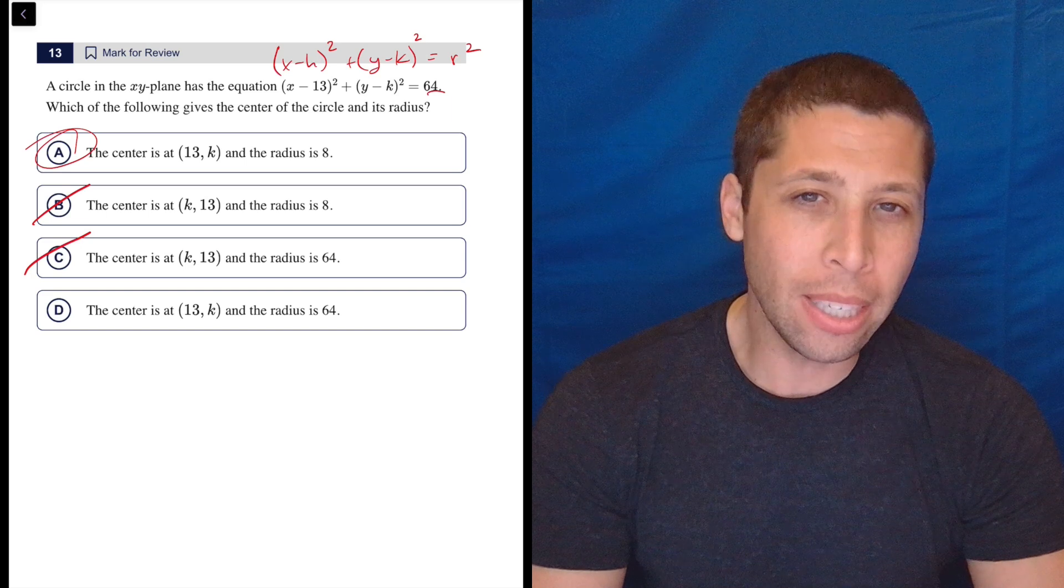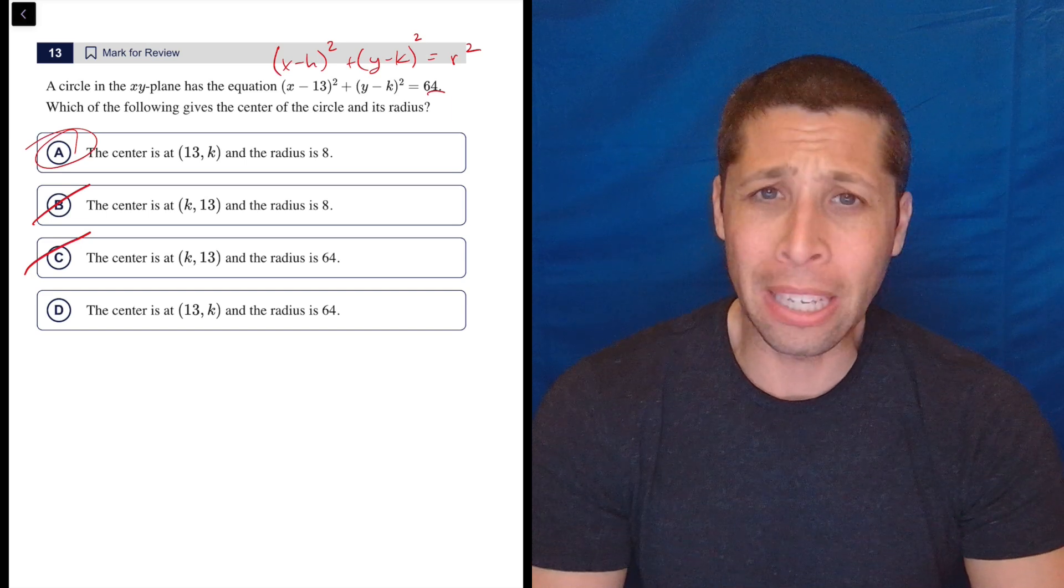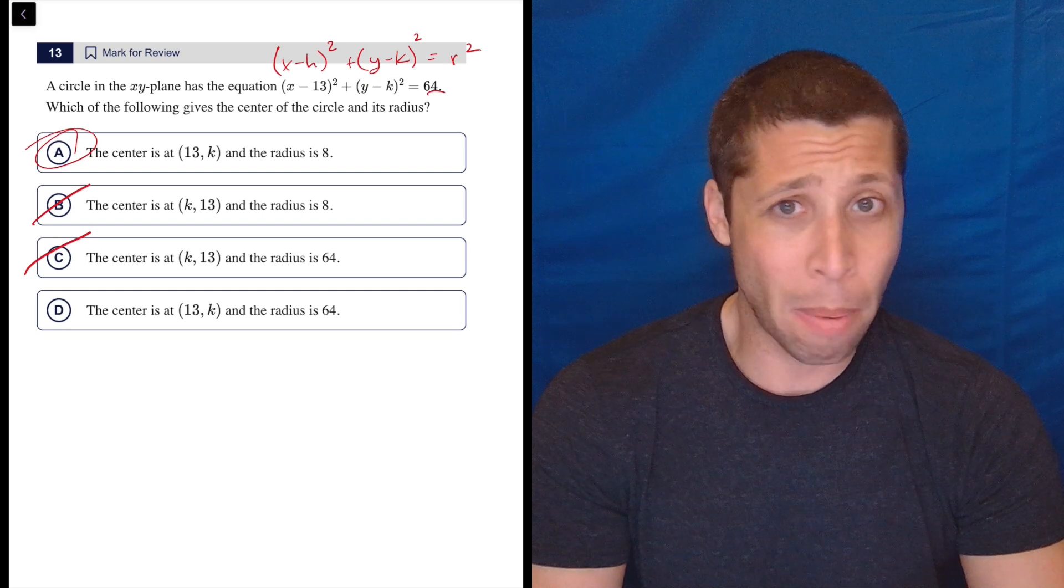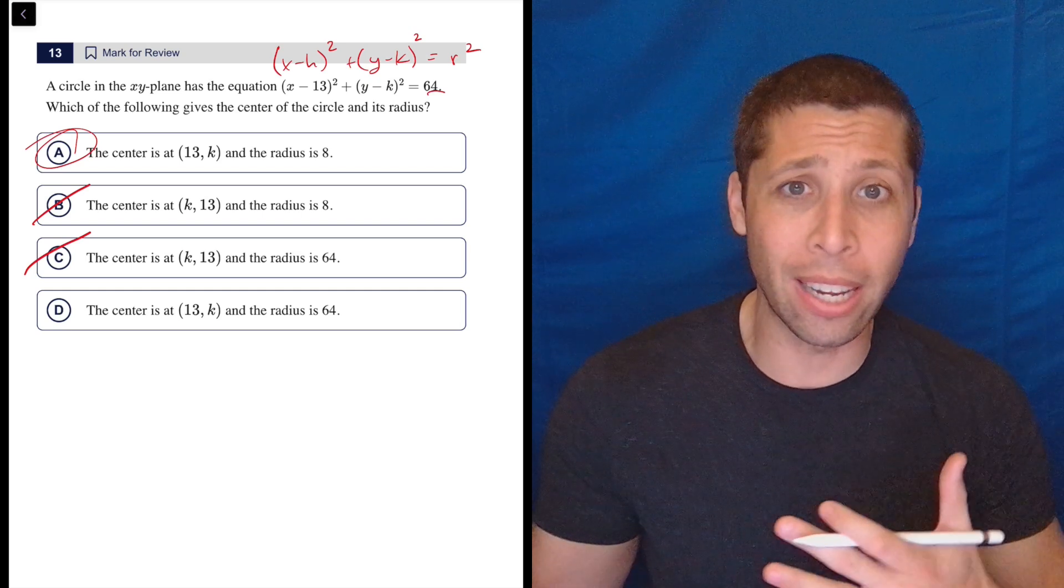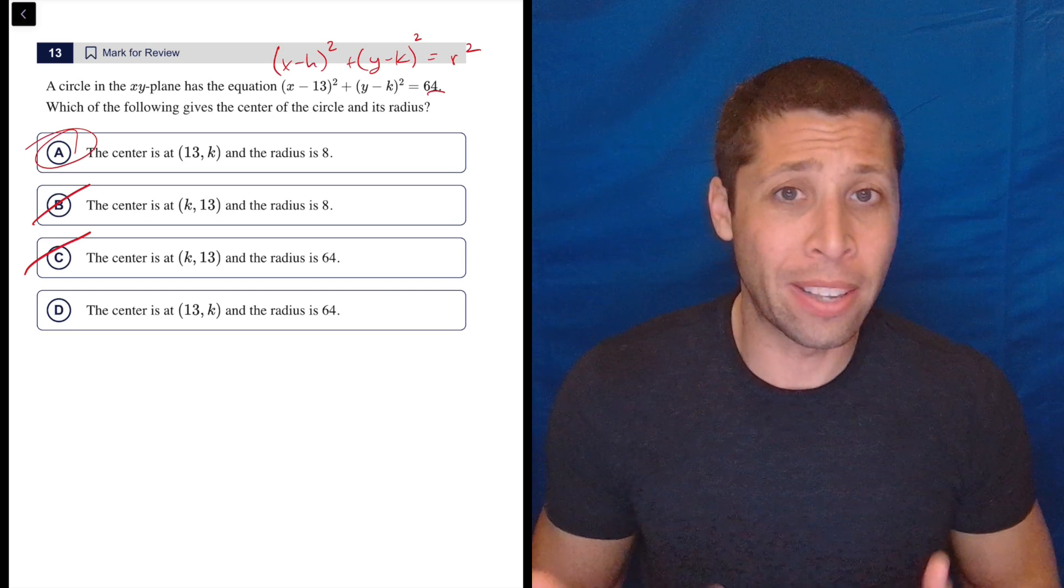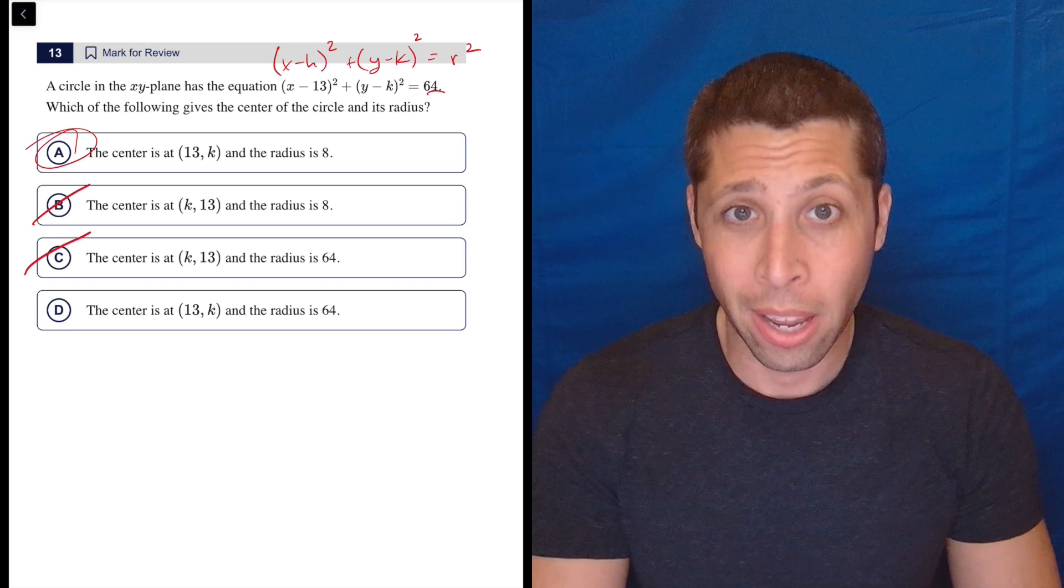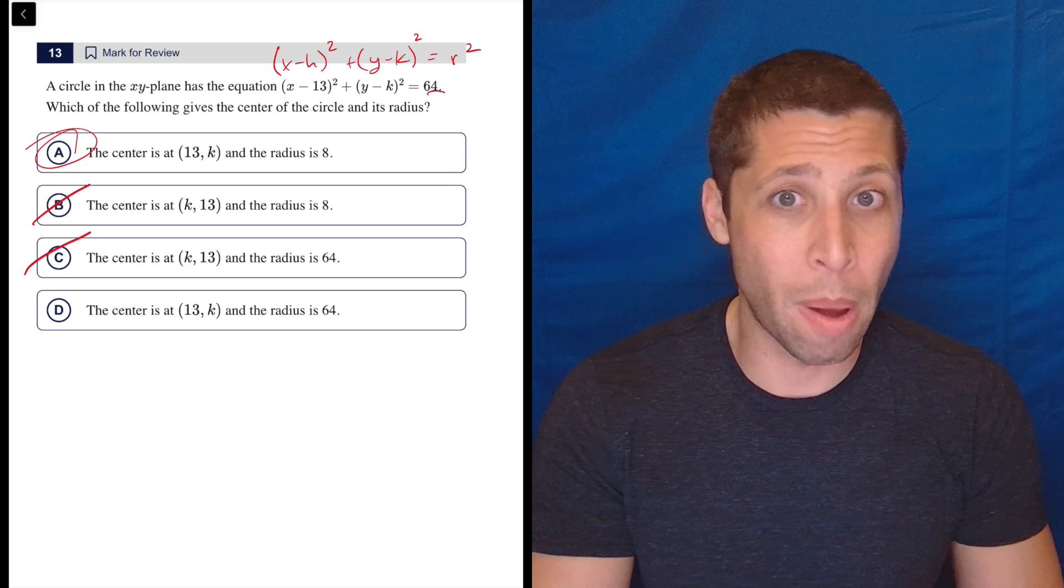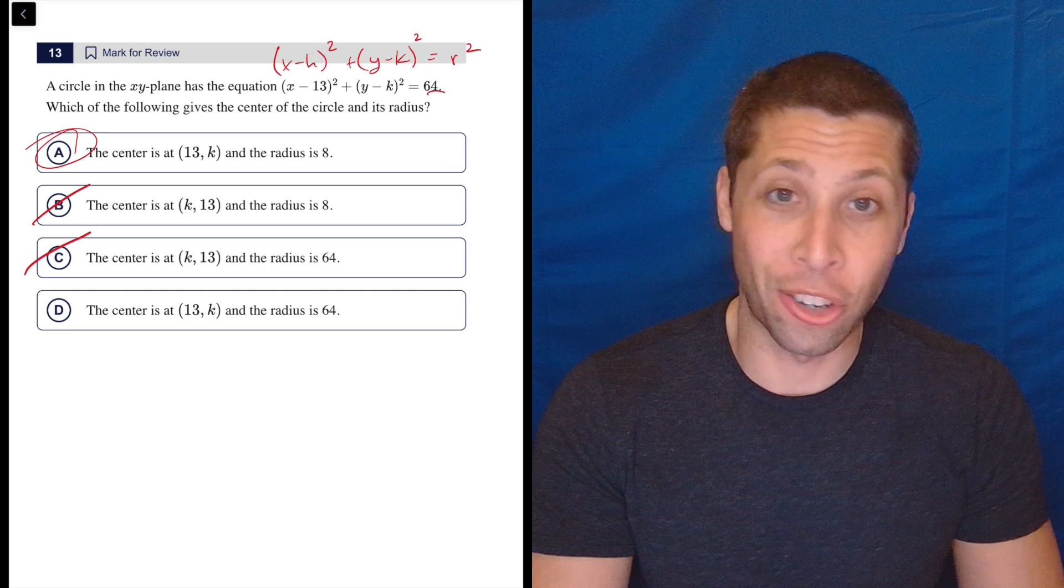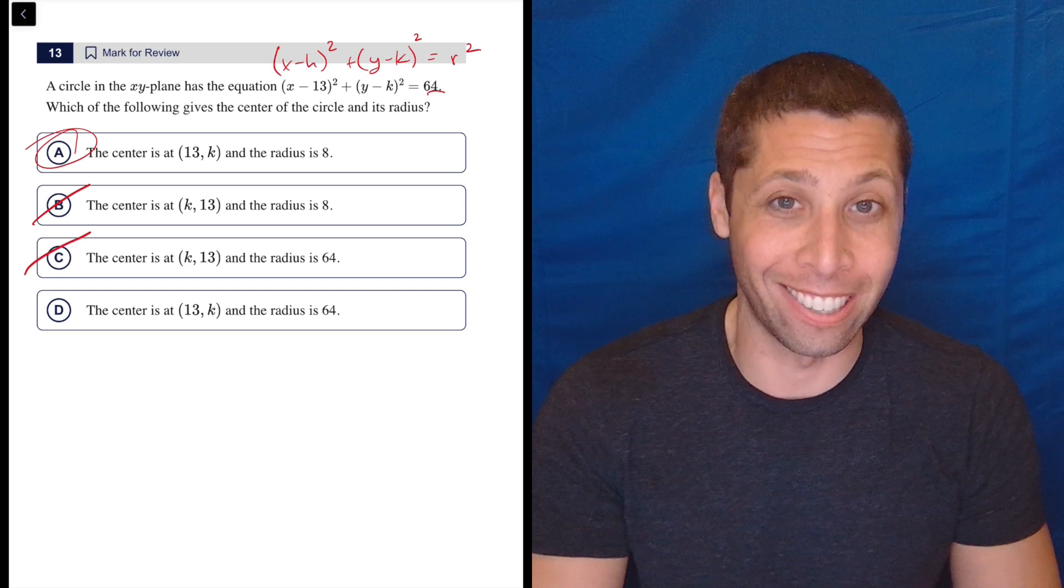But you really need to memorize this circle equation. It's going to come up at least once per SAT. And sometimes it's really just a matter of memorizing that formula and just reading what the formula says. So there's no trick to it here. It does get tricky sometimes, but this is a basic definition. A lot of SAT questions are just like, you memorize one fact and you get it in two seconds and you don't memorize the fact it's a giant mess. So memorize the facts and you'll get a lot of questions right really easily.